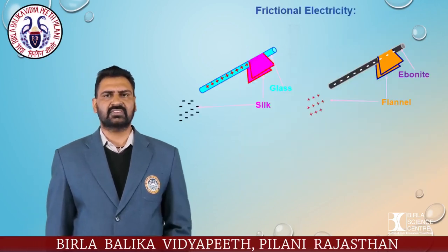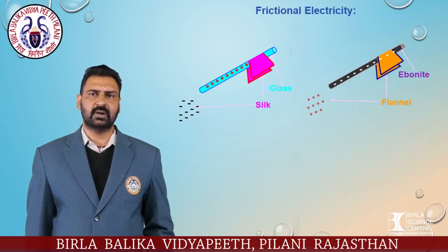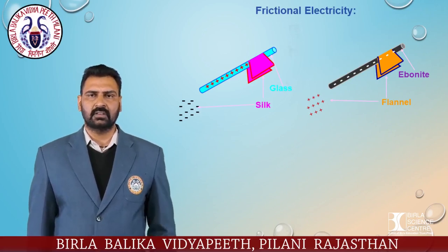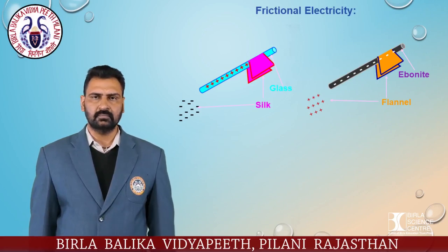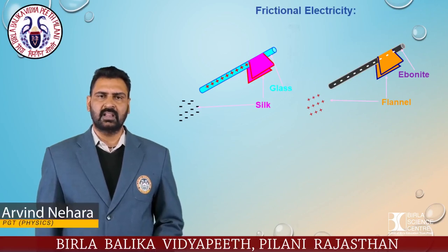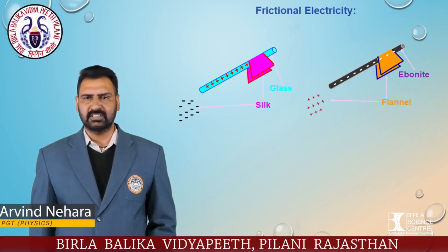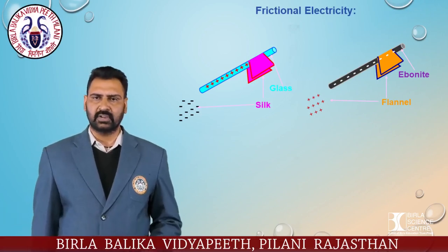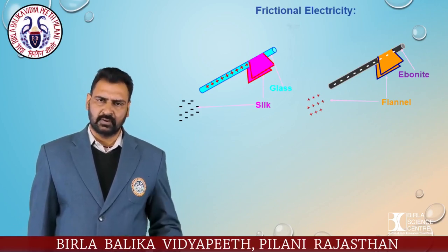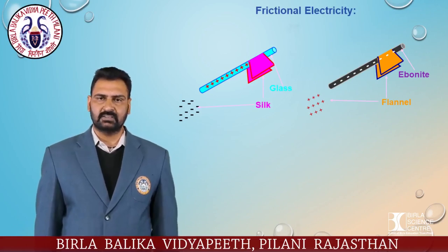What is frictional electricity? Frictional electricity is the electricity produced by rubbing two suitable bodies and transfer of electrons from one body to another. If we rub a glass with silk, electrons in glass are generally loosely bound than electrons in silk, so when glass and silk are rubbed together, the comparatively loosely bound electrons from glass get transferred to silk. As a result, glass becomes positively charged and silk becomes negatively charged.